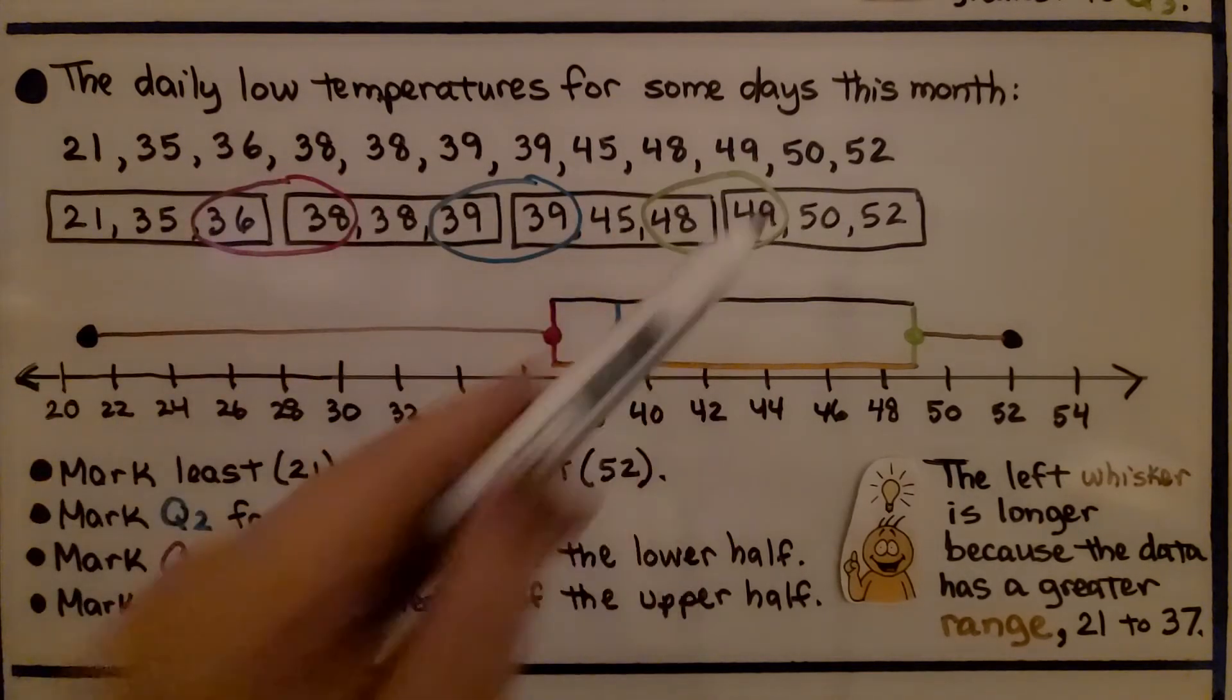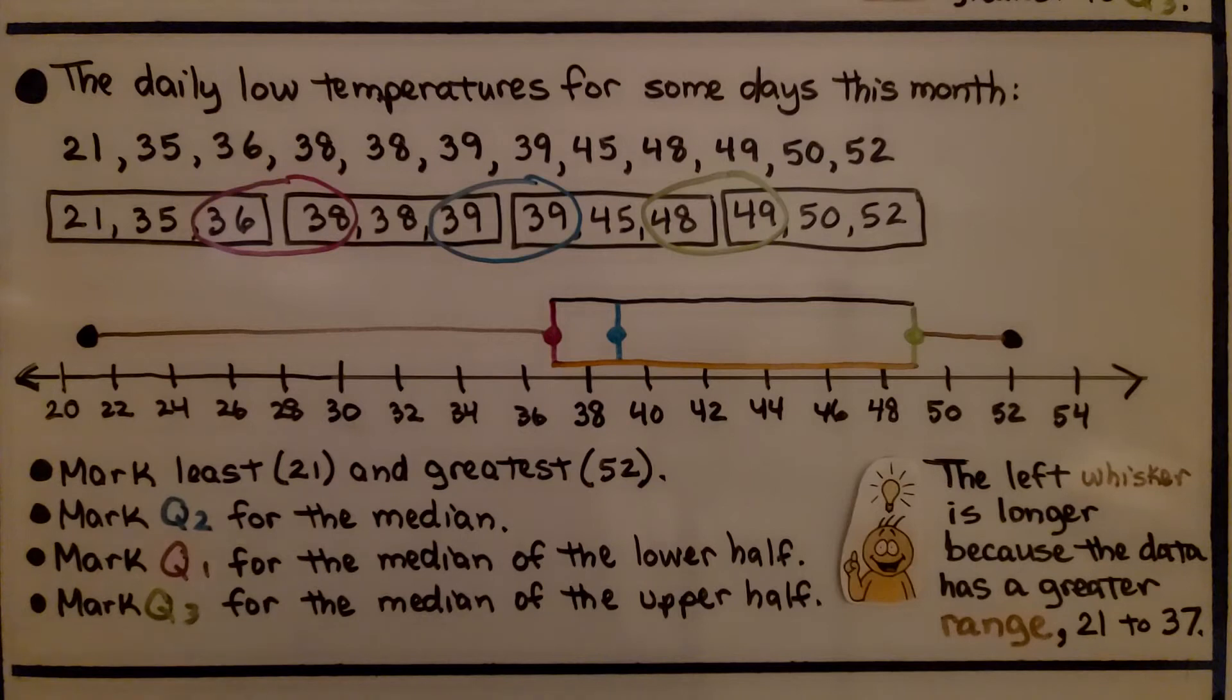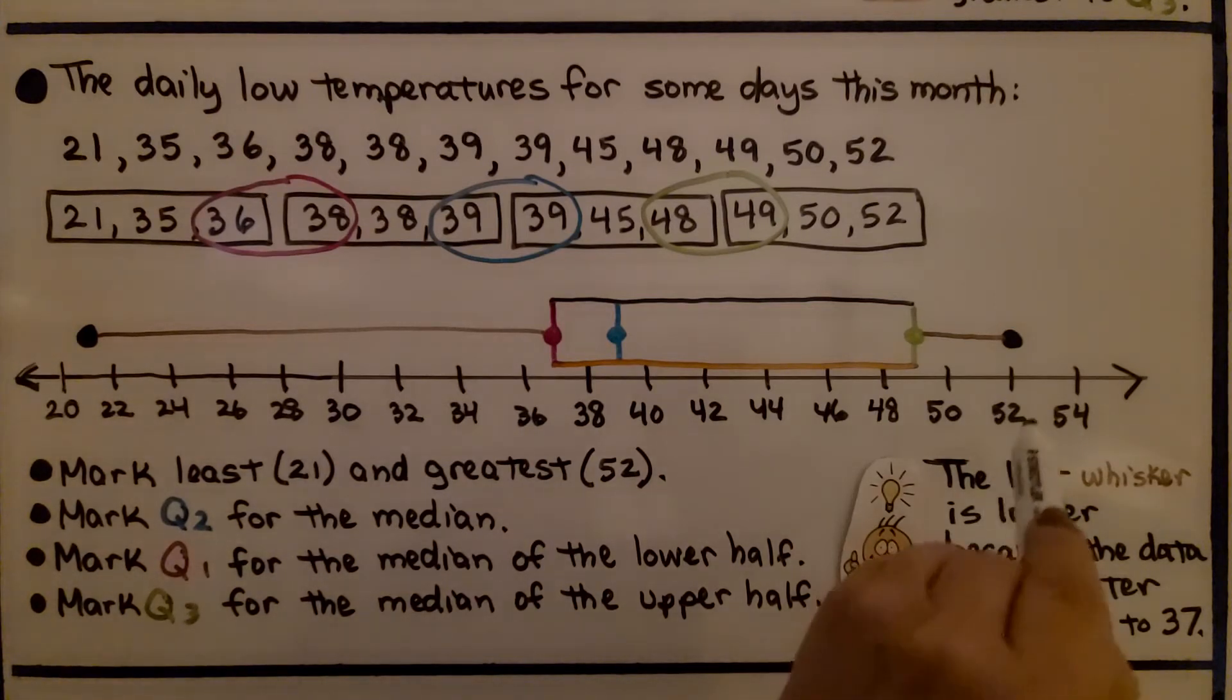They're all in order. And we divide the data into four equal sized parts or quarters. So we have one, two, three, four quarters. And we mark the least 21 right here. That would be between 20 and 22. And the greatest, which is 52.